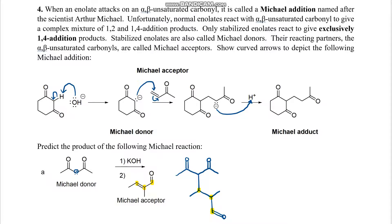This Michael donor from A, we see that we have an acidic proton, so we go ahead and use that to attack the number 4 position on that Michael acceptor, giving us this final product.